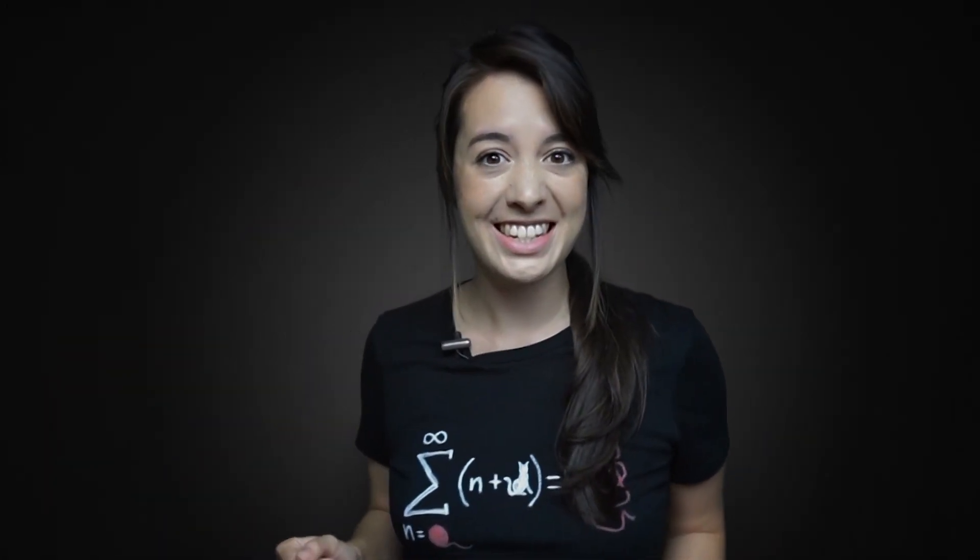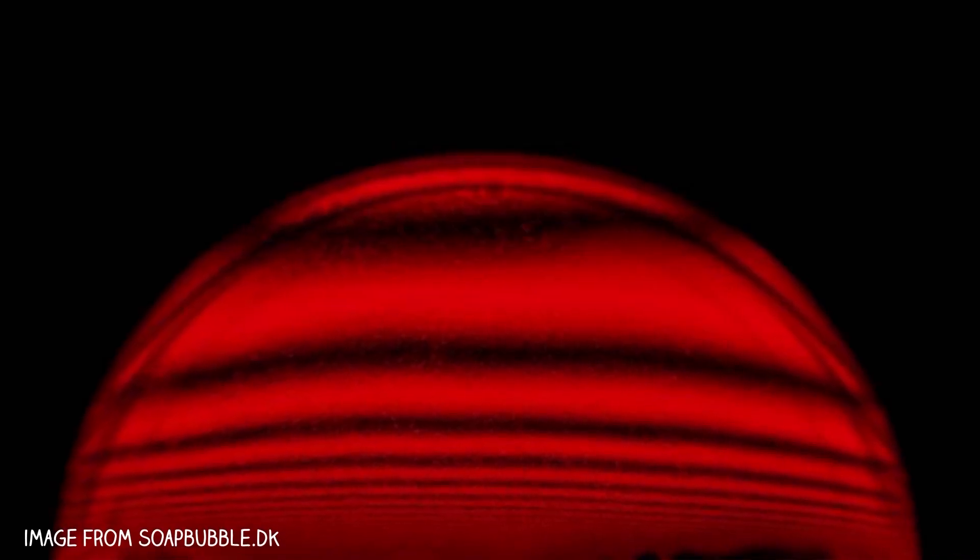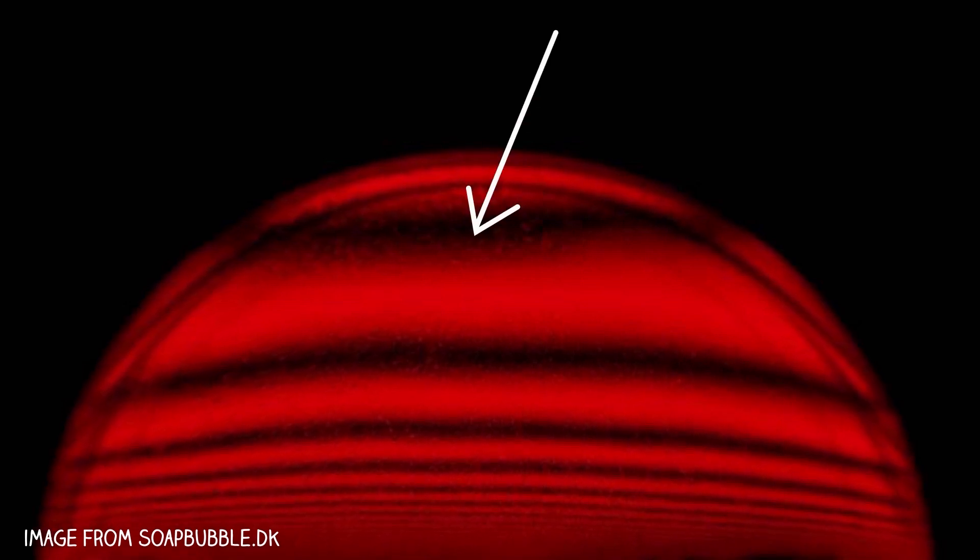But they do know it's what gives soap bubbles their colors. Even when light behaves as a particle, the varying thickness of the bubble wall affects how many photons are reflected, just like the sheet of glass. This is a soap bubble illuminated with pure red light. See those dark bands? That's the exact thickness where the reflection cancels out.